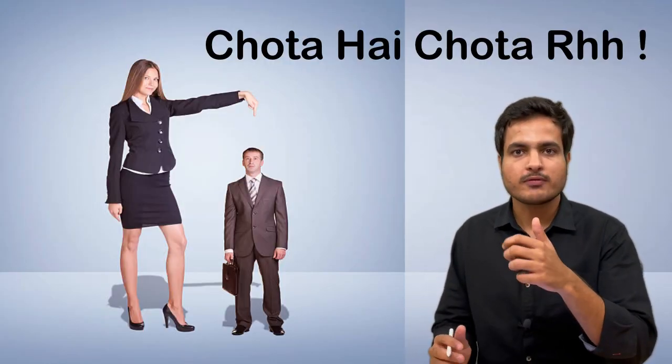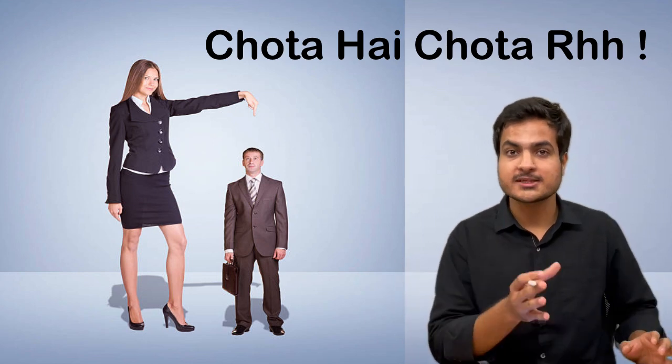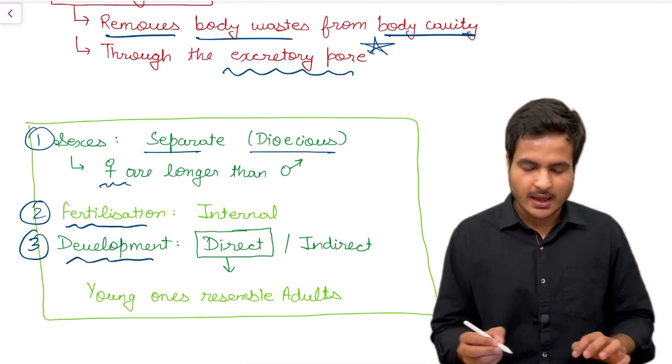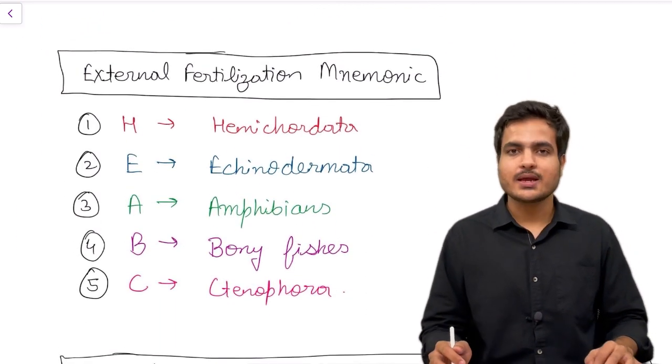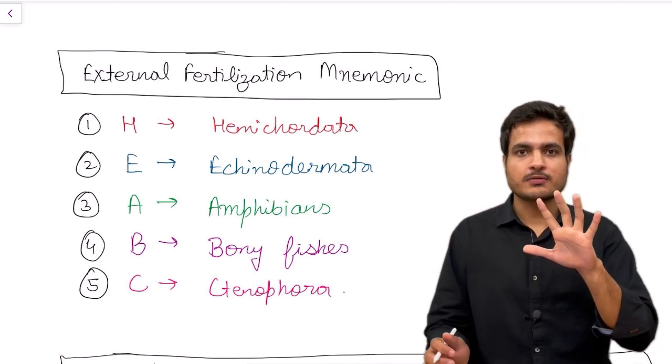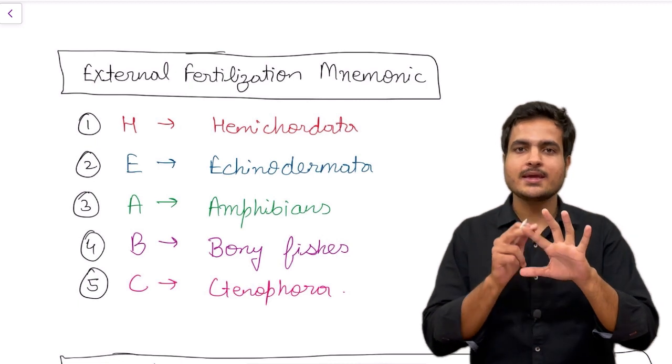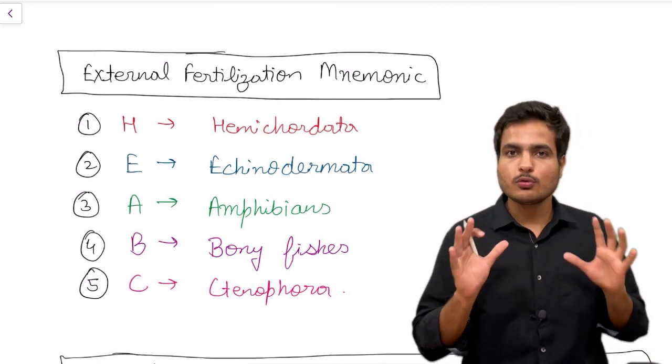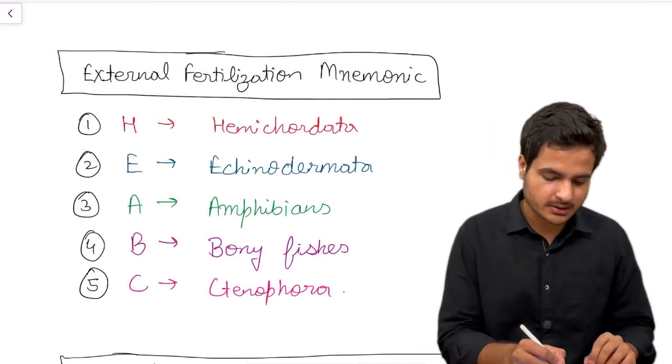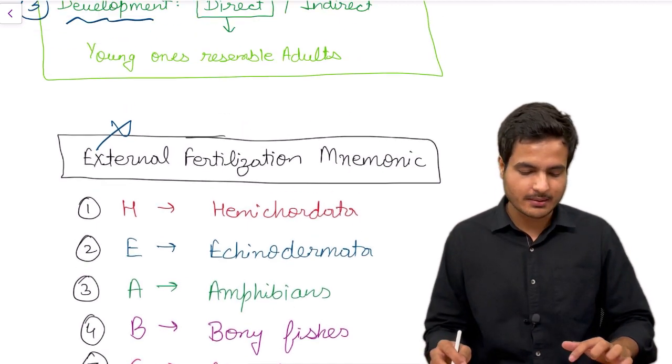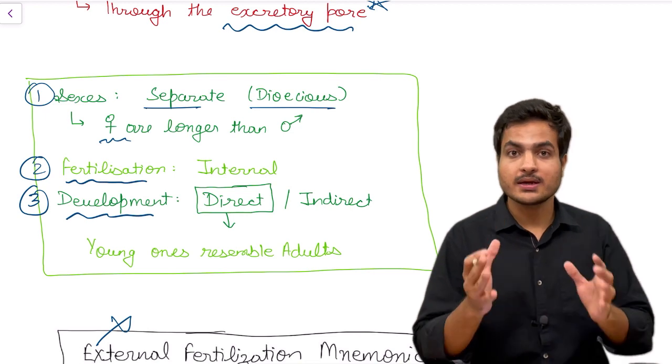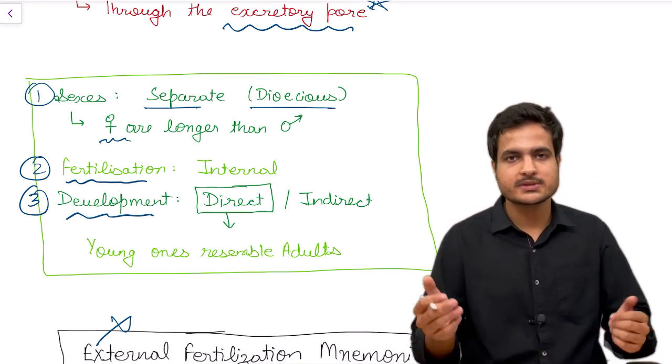In roundworms we have male and female different bodies and females are generally longer. Now let's talk about fertilization. We have a mnemonic for external fertilization shown by five categories of animals which is learned by HEABC. We can see that we do not have any space for Aschelminthes. Therefore the gametes from the male are discharged into the female body where they internally fuse with the female gamete to form a zygote. Therefore the fertilization in roundworms is internal.